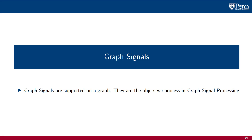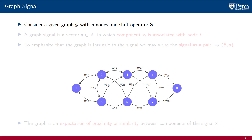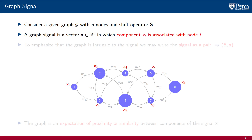Graph signals are the objects we process with graph filters and graph neural networks. Begin with a graph G having N nodes and shift operator S. A graph signal is a vector which also has N components, and in which we associate component Xi to the i-th node of the graph. In the diagram, we show a graph with 8 nodes supporting a graph signal with 8 components. Different components of the signal are associated to different nodes of the graph, something that we represent by scaling the size of the nodes.